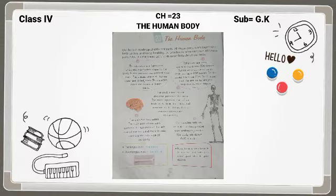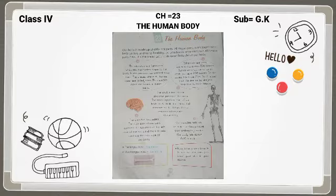तो इस brain का काम क्या होता है बच्चो? Things to think and remember. चीजों को याद करना, किसी चीज के बारे में सोचना, सब कुछ हम brain की द्वारा करते हैं. It also controls other parts of our body. और हमारे शरीर के कई दूसरे अंगों को भी control करता है. The brain has two sides. Brain की भी two sides होती हैं. The right side of our brain controls the activities of the left side of the body, and the left side controls the right side of the body. This is a very important fact. Please note this main line in your copy.